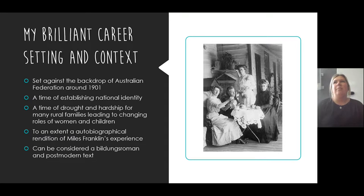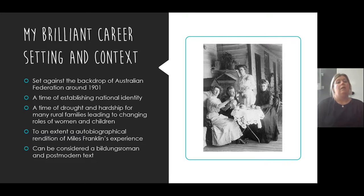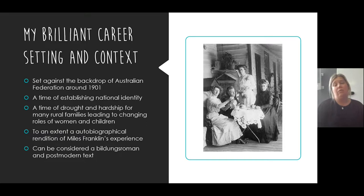One thing seen in a few moderated SACs was a really generic sentence like 'My Brilliant Career and Photograph 51 diverge in time, place, and setting' — please don't write that, it tells us nothing. For My Brilliant Career, setting and context: set against the backdrop of Australian federation around 1901, roughly 50 years earlier than Photograph 51 and in a completely different place. Australia was on the cusp of establishing a national identity — a really exciting time, breaking away from Britishness and defining its own identity.